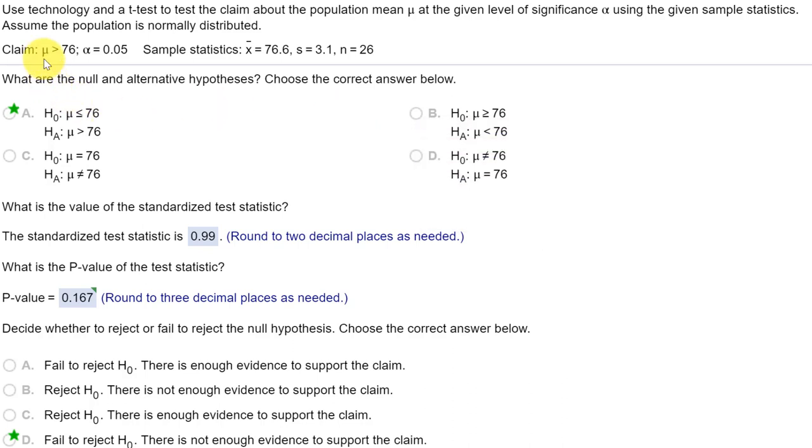In this particular problem, we're given a claim that the population mean mu is greater than 76, alpha is 0.05, and we're given summary sample statistics. The sample mean x-bar 76.6, the sample standard deviation s, not the population standard deviation sigma, but it's equal to 3.1, and a sample size of 26.